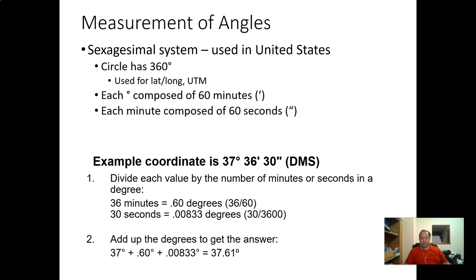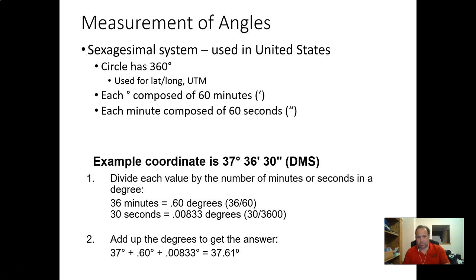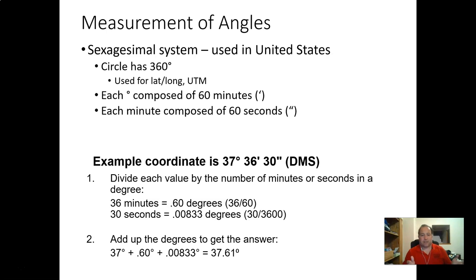What does that mean for us? We're going to use the sexagesimal system — a fancy way of saying the circle has 360 degrees, which we learned in geometry. We have this little magnet inside our compass pointing north and south, and we're going to take that 360-degree circle and divide it up, because angles are really good for expressing direction.